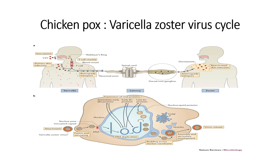through the nuclear pore into the nucleus. The DNA then gets uncoated from the capsid and forms a circular structure. From the literature it has been observed that as the DNA is formed, immediate early protein secretion happens, followed by another category called early proteins, and the third category of proteins secreted are the late proteins.